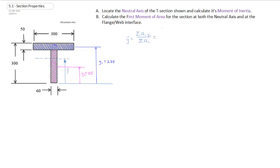So we have the area, which would be its width, which is 300 millimeters, times its thickness of 50 millimeters. And we said that y_1 was 275 millimeters.